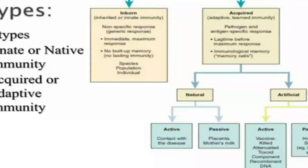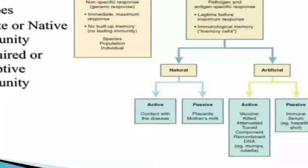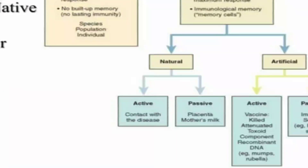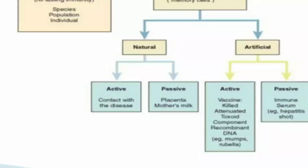Acquired immunity is divided into natural immunity and artificial immunity. Natural immunity includes active immunity — when an individual comes in contact with the disease — and passive natural immunity, which comes from placental transmission of antibodies from the mother and from mother's milk. Artificial immunity involves vaccination using live, live attenuated, killed, toxoid, or recombinant DNA vaccines.